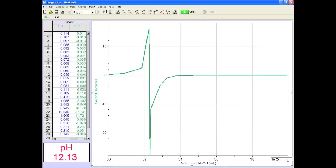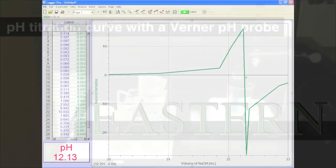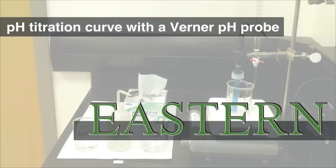Clean up and be sure to rinse the probe and put the probe back in the storage buffer. Now you know how to create a titration curve using a Vernier pH probe.